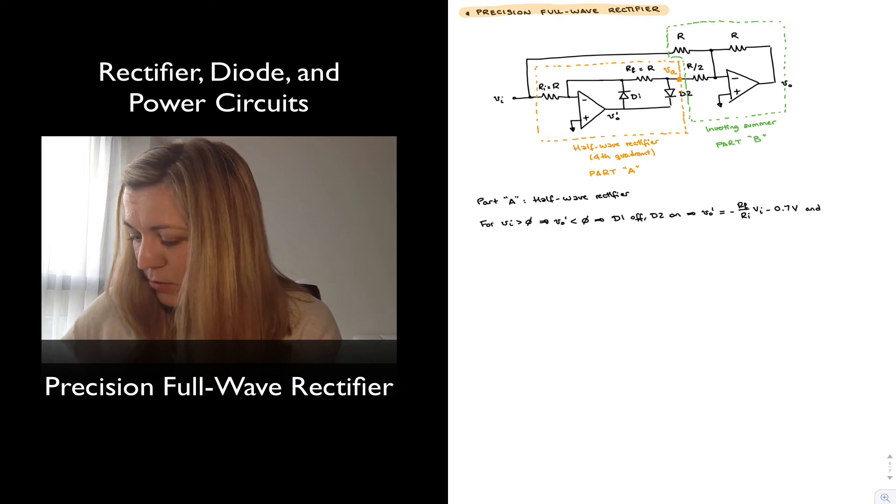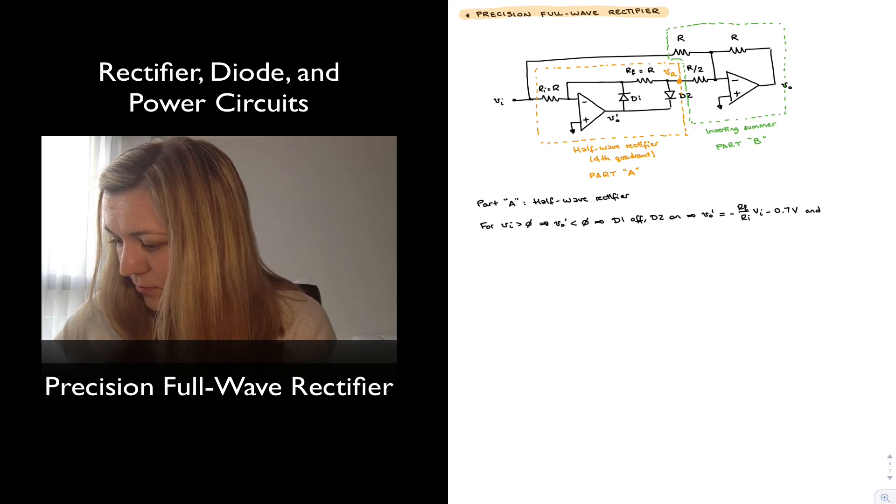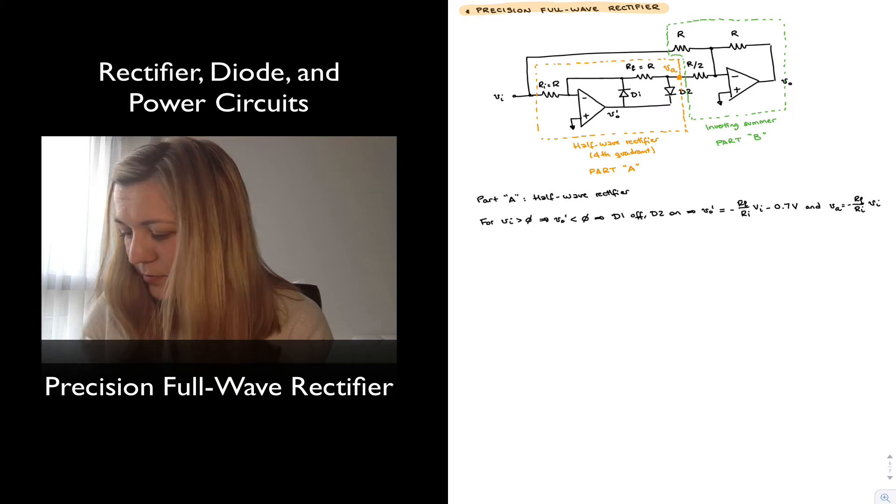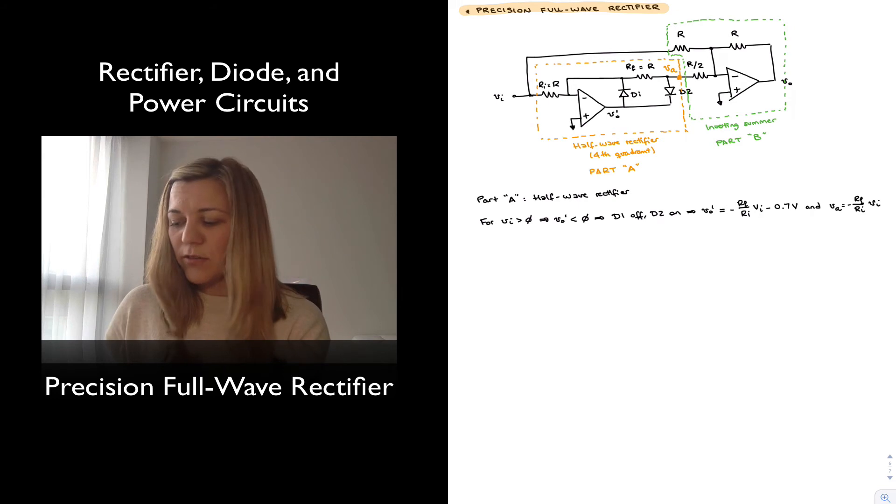And the one that we care about is VA, which is negative RF over RI times V in. And we'll leave it expressed like that for now. Later on, we will replace that RF and RI resistor values with value R.